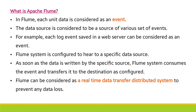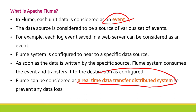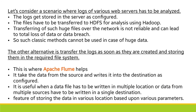In Apache Flume, each unit of data is considered as an event. The data source is considered to be a source of various sets of events. For example, each log event saved in a web server can be considered as an event. As soon as data is returned by a specific source, the Flume system consumes the event and transfers it to the destination as configured. The destination can be a real-time data transport distributed system.